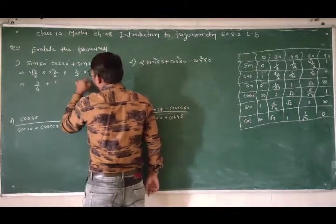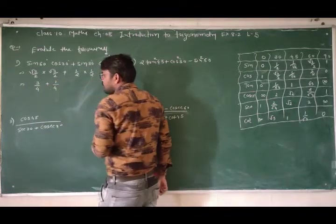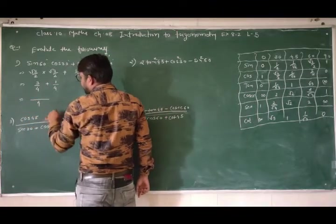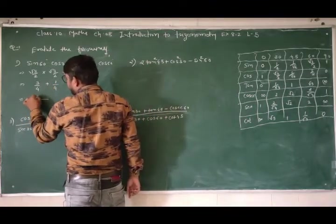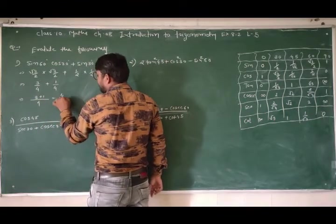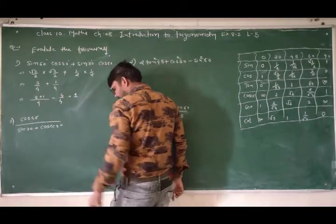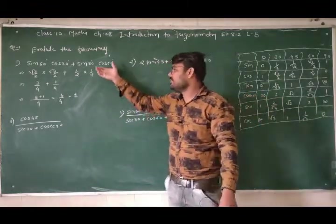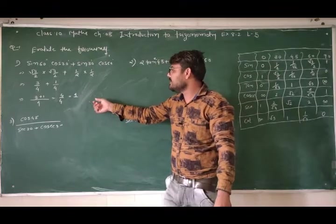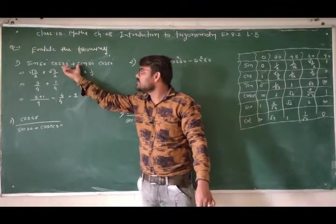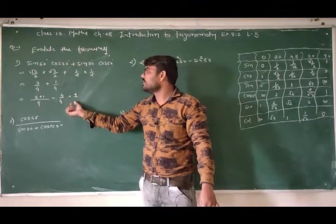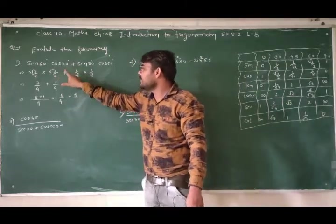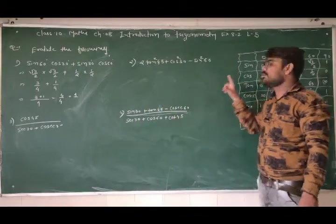यहाँ पे भी 1×1 = 1, 2×2 = 4. अब LCM equal है, तो numerator का addition करते हैं: 3 + 1 = 4. So 4/4 = 1. Friends, we are asked to evaluate the questions, and we have evaluated it — we got the answer as 1.